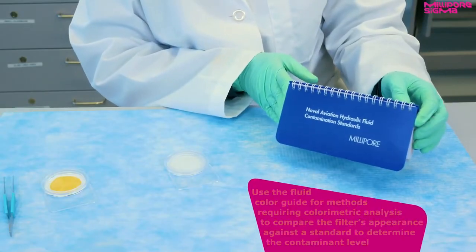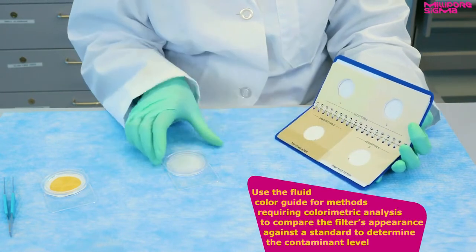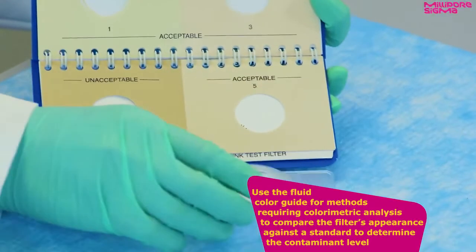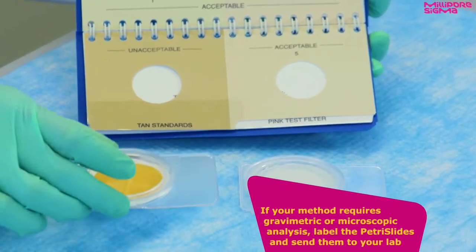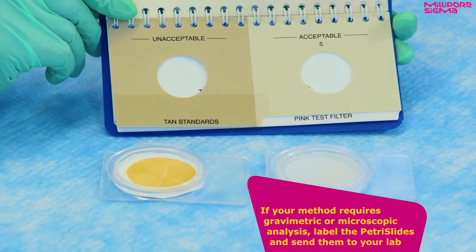Use the Fluid Color Guide for methods requiring colorimetric analysis to compare the filter's appearance against a standard to determine the contaminant level. If your method requires gravimetric or microscopic analysis, label the Petri slides and send them to your lab.